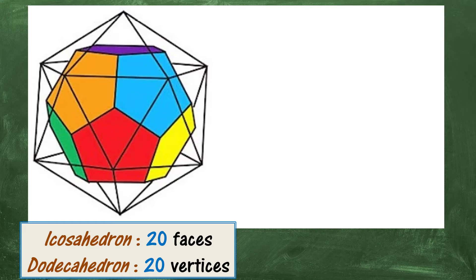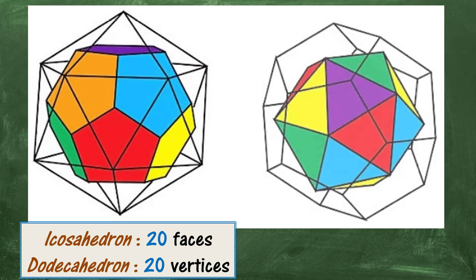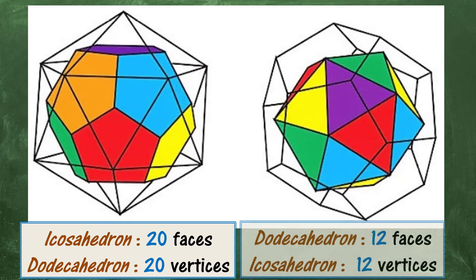The icosahedron has twenty faces. The dodecahedron has twenty vertices. And if we start with a dodecahedron and join the centres, we get an icosahedron. The dodecahedron has twelve faces and the icosahedron twelve vertices. Another dual pair.